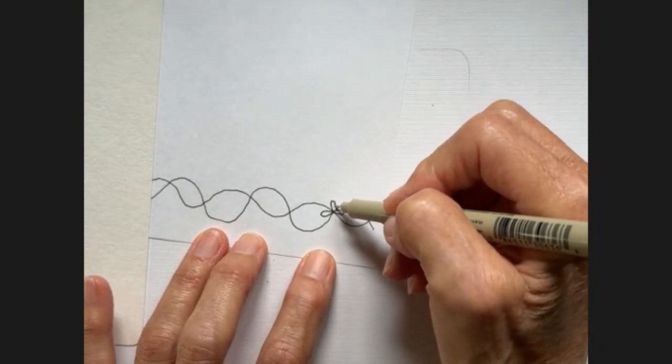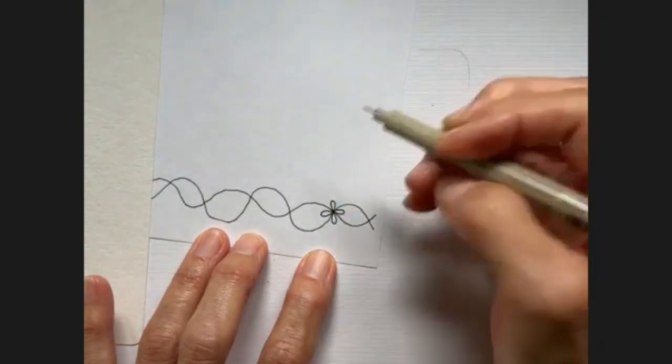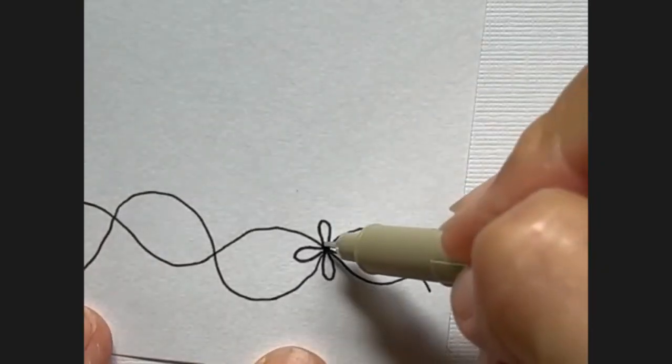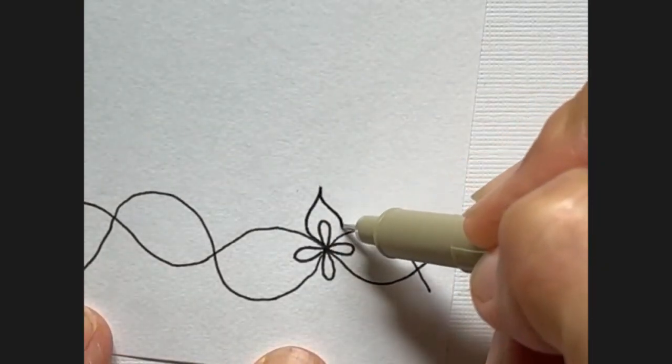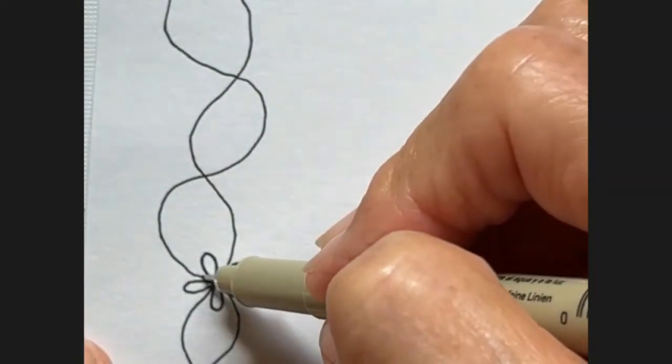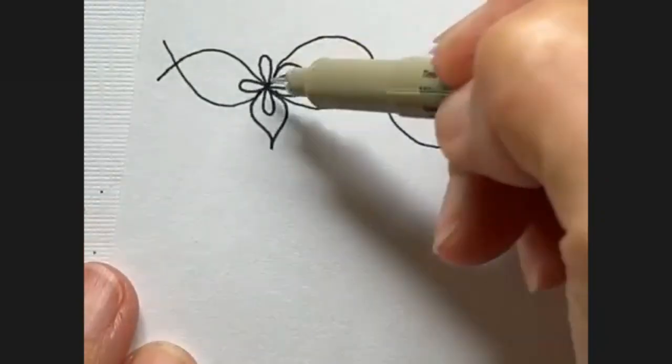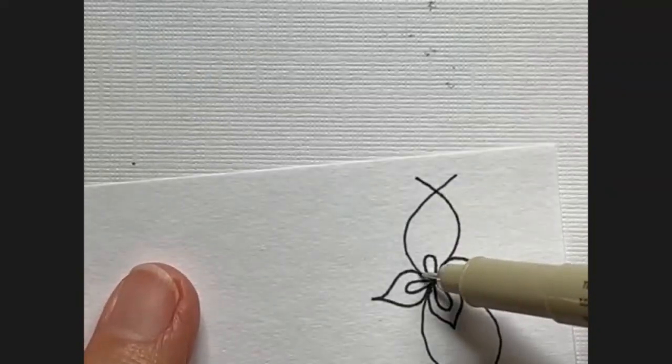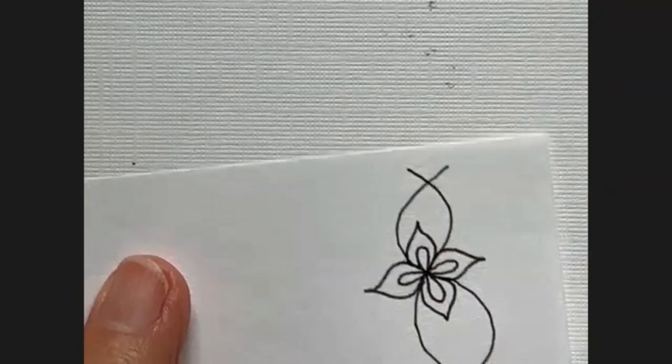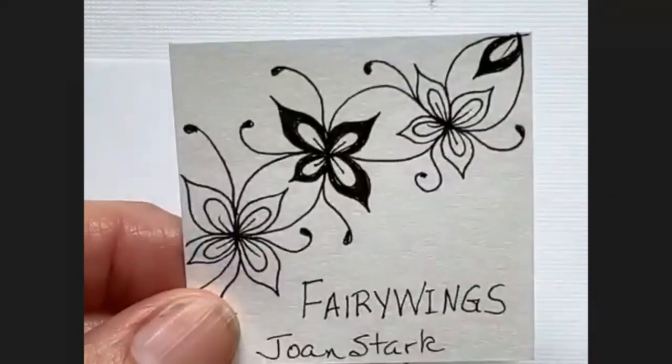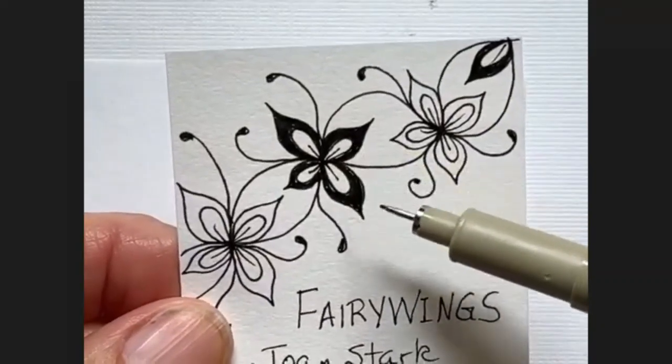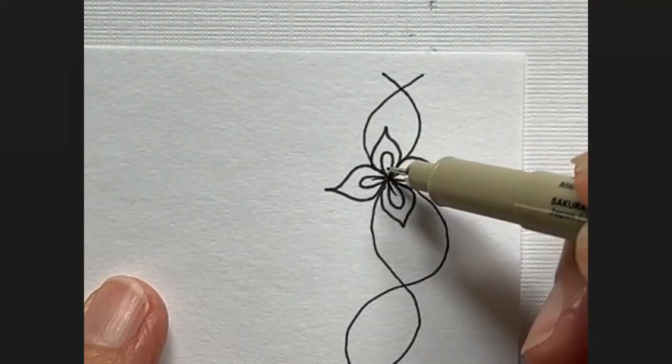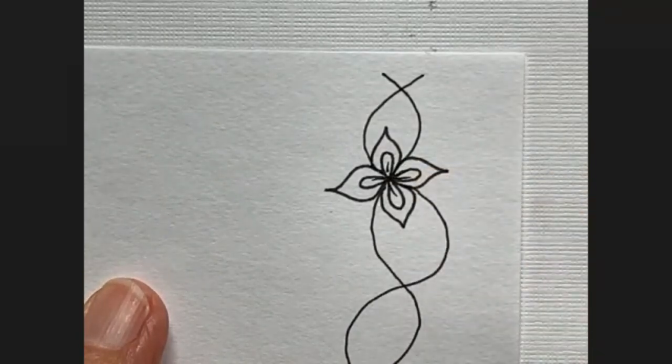And then you go inside and put little petals like this, and then two more little petals like that. I suppose I can zoom in. And then on the outside of these, you put outer petals.